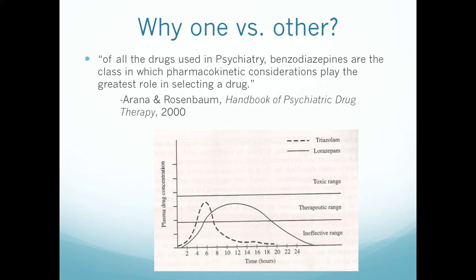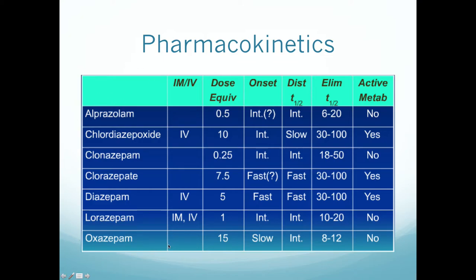Even though benzodiazepines all share the same mechanism of action — binding to the benzodiazepine site, allowing chloride influx and hyperpolarizing postsynaptic neurons — they have large differences due to pharmacokinetic properties. Some are very short-acting and some are long-acting. When examining these drugs you'll look at route of administration, dose equivalency, onset of effects, half-life to distribution, and elimination half-life — how long it takes for 50% of the drug to leave the body.